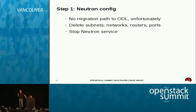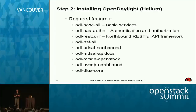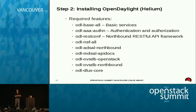Step one — Neutron config. Unfortunately there's no migration path, so you need to delete all your subnets, networks, routers, ports, stop the Neutron service, and stop and disable all of the L2 agents on all your compute nodes. For installing OpenDaylight, there are a number of required features. The base is 'basicservices'. NSF is a catch-all basket that includes among other things the Neutron northbound stuff. In Helium, ODL uses AD-SAL (Application Driven Service Abstraction Layer), which is moving to MD-SAL (Model Driven Service Abstraction Layer) in Lithium — where you define a YANG model for the service and it generates the north and southbound interfaces.